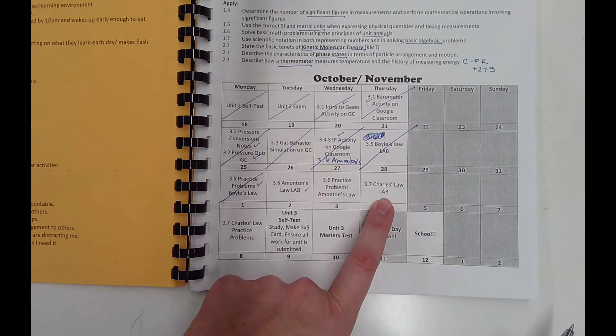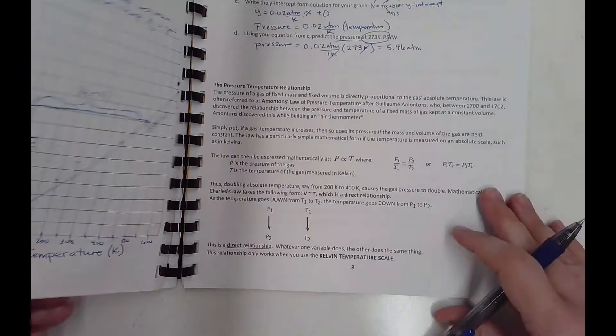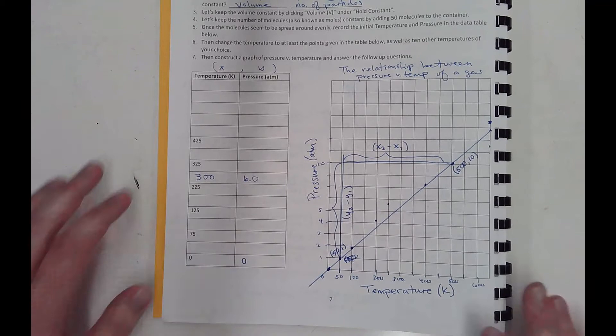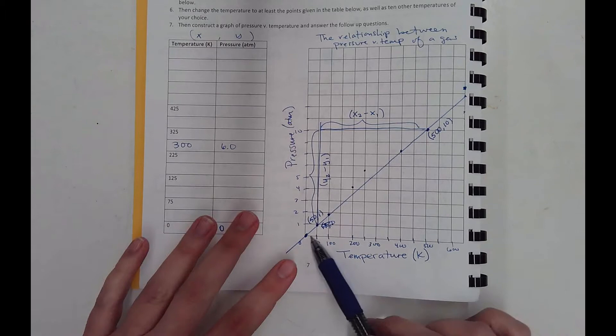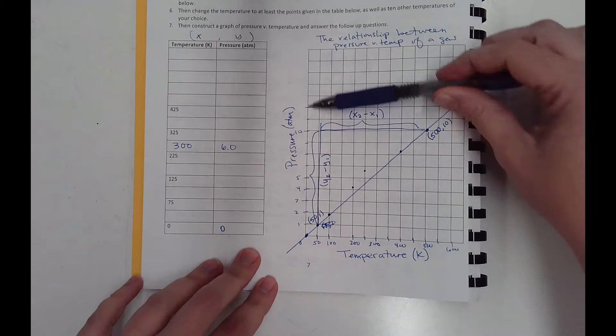Let's take a look at what we did on page 7. This is already posted as a separate video — we collected our data on temperature versus pressure. We saw that as temperature goes up, pressure goes up. Temperature, which we controlled, goes on the x-axis, and pressure, which we measured, goes on the y-axis.